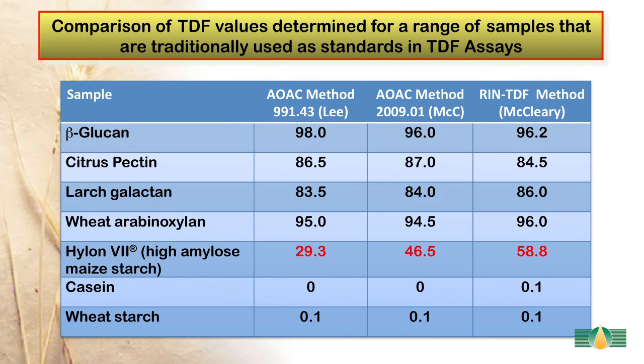This slide shows the comparison of total dietary fibre values determined for a range of samples traditionally used as standards in TDF assays. Three methods are compared: the Lee method, AOAC method 2009.01, and the rapid integrated total dietary fibre method. For beta-glucan, citrus pectin, larch galactan, wheat arabinoxylan, casein, and wheat starch, very similar values are obtained with each method, even though the rapid integrated procedure uses much higher enzyme levels, demonstrating the purity of the enzymes. With high amylose maize starch, the rapid integrated procedure gives a much higher value.